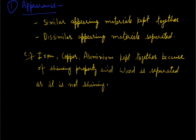Now further something about shining property, the shining property of iron, copper, aluminum. It becomes dull after some time because of the action of air and moisture on them.